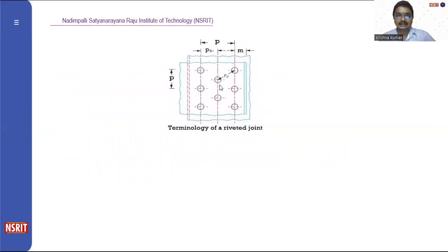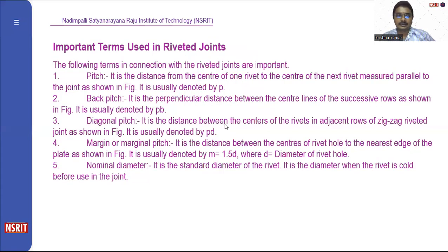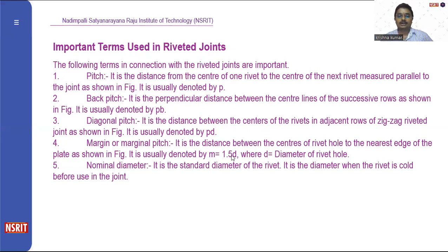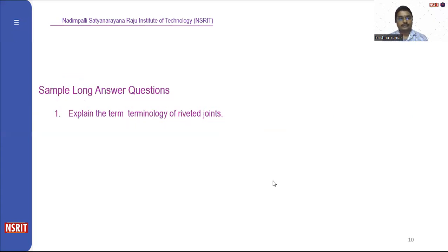Diagonal pitch (Pd) is the distance between the centers of the rivets in adjacent rows of zigzag riveted joints, denoted by Pd. Margin or marginal pitch (m): it is the distance between the center of the rivet hole to the nearest edge of the plate, denoted by m = 1.5 × d (diameter of the hole). Nominal diameter: it is the standard diameter of the rivet — the diameter of the rivet in the hole before using the joint.